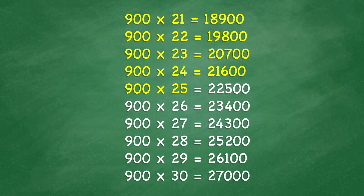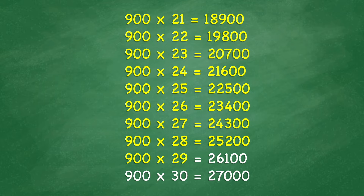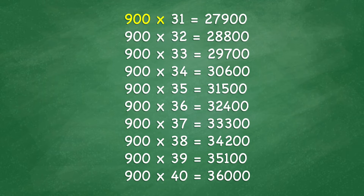900 times 25 equals 22,500. 900 times 26 equals 23,400. 900 times 27 equals 24,300. 900 times 28 equals 25,200. 900 times 29 equals 26,100. 900 times 30 equals 27,000. 900 times 31 equals 27,900. 900 times 32 equals 28,800.